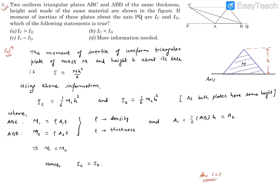Question 3. It reads: two uniform triangular plates ABC and ABD of the same thickness, same height, and made of same material, all shown in the figure.